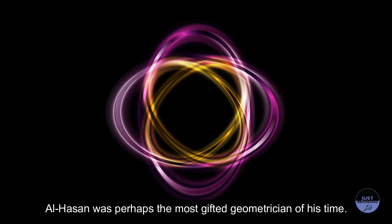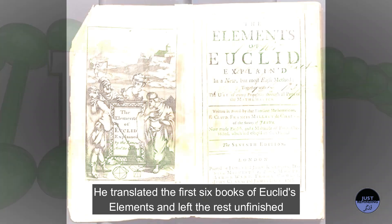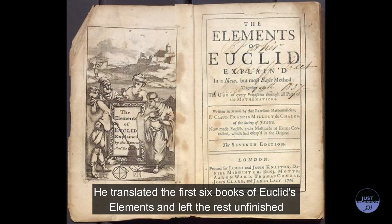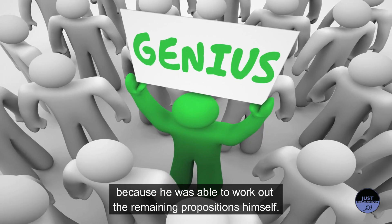Al-Hassan was perhaps the most gifted geometrician of his time. He translated the first six books of Euclid's Elements and left the rest unfinished because he was able to work out the remaining propositions himself.